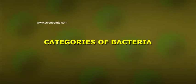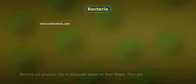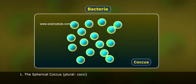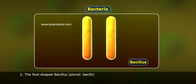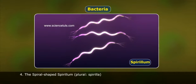Categories of bacteria: Bacteria are grouped into four categories based on their shape. They are: 1. Spherical coccus, plural cocci. 2. Rod-shaped bacillus, plural bacilli. 3. Comma-shaped vibrio, plural vibrios. And 4. Spiral-shaped spirillum, plural spirilla.